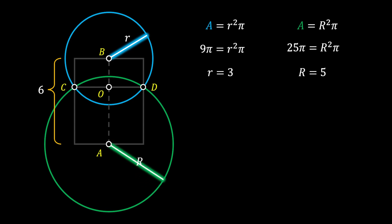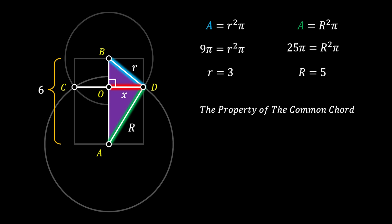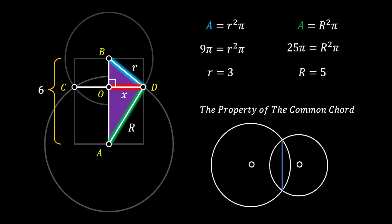Now we can rotate the radii of both circles to the point D, forming the triangle ADB. Let's label the line OD as x, which represents the height of this triangle since the angle at point O is a right angle. We know this by using the property of the common chord, which states that the common chord of two circles is perpendicular to the straight line passing through the centers of those circles. In our case, line CD is the common chord and line AB passes through both centers.